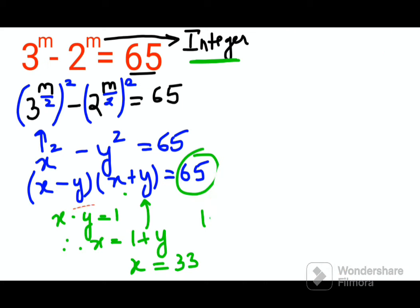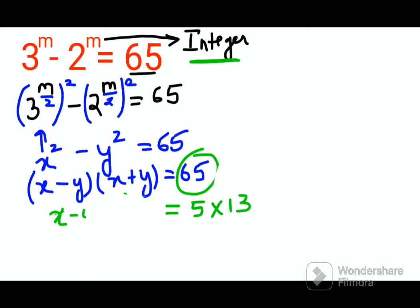Now what we will do is instead of taking 1 and 65, we will take 65 factorization as 5 times 13. So we can say x minus y times x plus y equals 5 times 13. Therefore x minus y equals 5 and x plus y equals 13.